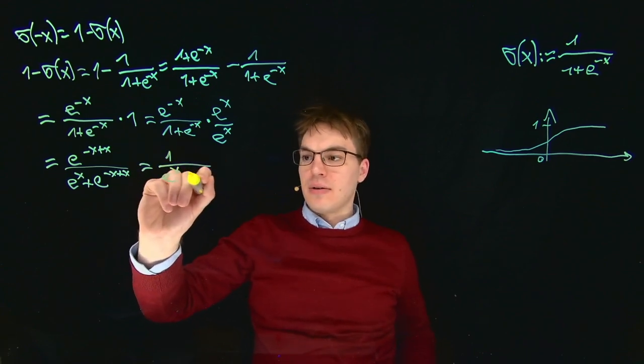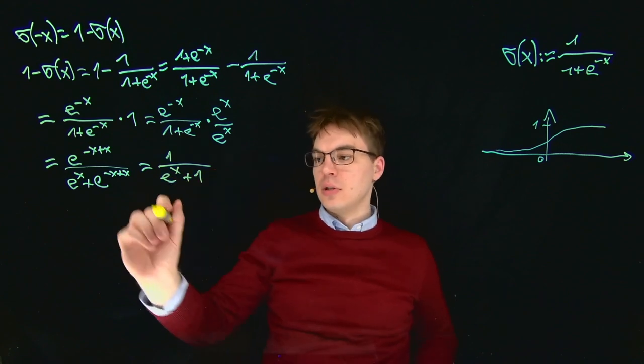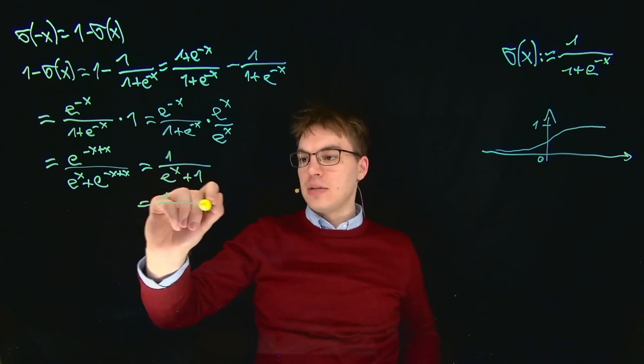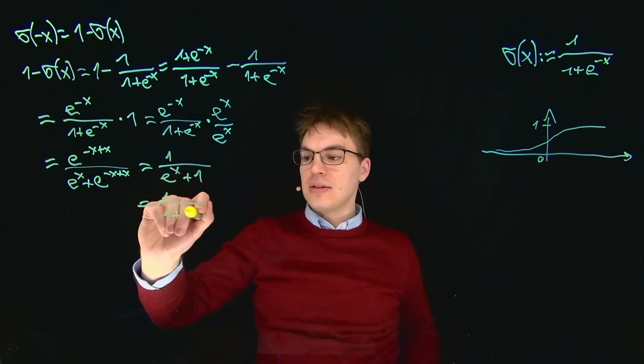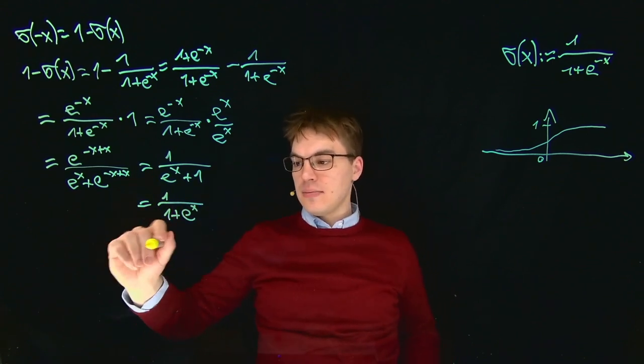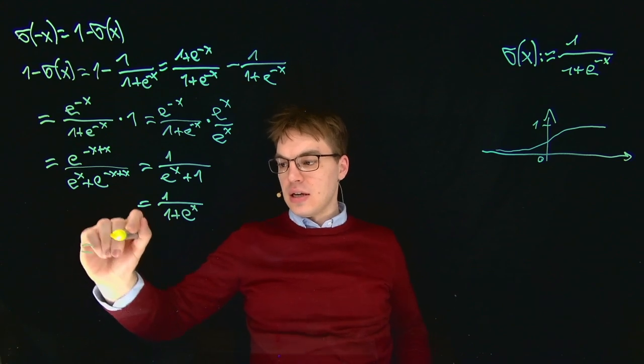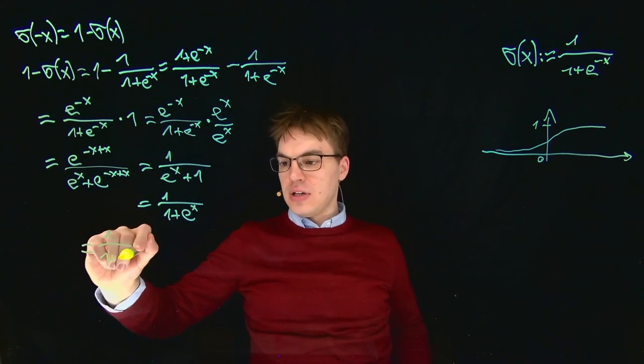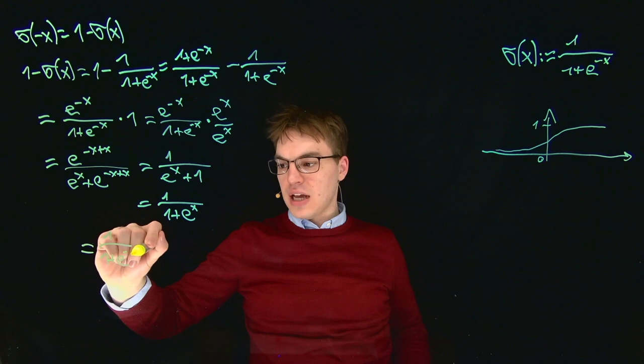So we get one divided by e to the power of X plus one, or just one divided by one plus e to the power of X. And if we look closely, we can see that this is just our definition but with a negative sign.